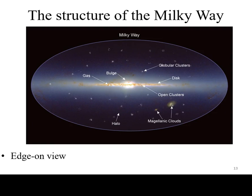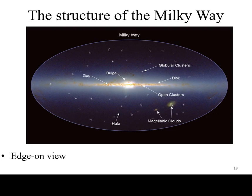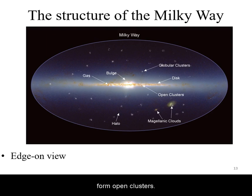Viewed edge-on, the galaxy resembles a disk. The bulge is wider than the rest of the plane of the galaxy. In the disk are found the gaseous star-forming regions that then form open clusters.